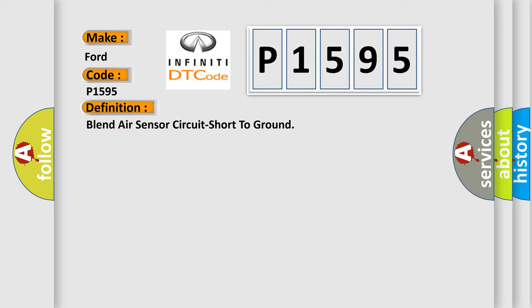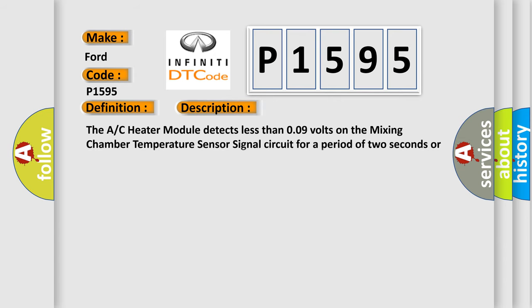The basic definition is blend air sensor circuit short to ground. The AC heater module detects less than 0.09 volts on the mixing chamber temperature sensor signal circuit for a period of two seconds or more.